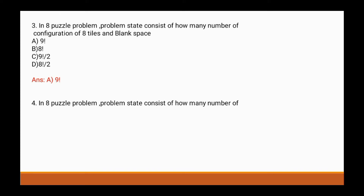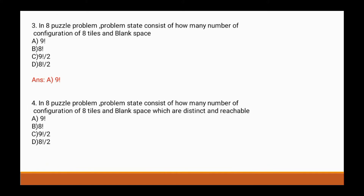Question 4: In the 8-puzzle problem, how many configurations of eight tiles and blank space are distinct and reachable? Options are: a) 9 factorial, b) 8 factorial, c) 9 factorial divided by 2, d) 8 factorial divided by 2. The correct answer is c) 9 factorial divided by 2.